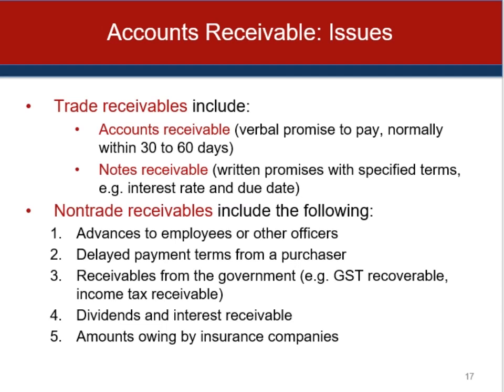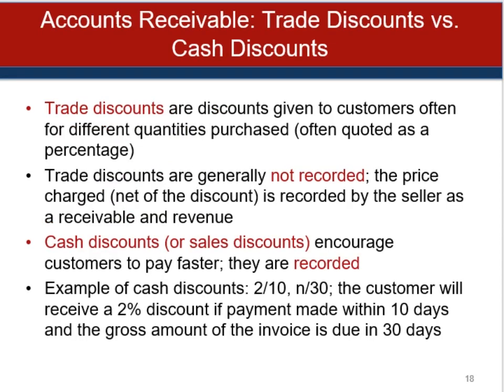Two types of discounts must be considered in determining the value of receivables: trade discounts and cash discounts. Trade discounts represent reductions from the list or catalog prices of merchandise and are often used to avoid frequent changes in catalogs or to quote different prices for different quantities purchased. Cash discounts, also called sales discounts, are offered as an inducement for prompt payment and are communicated in terms such as 2/10 net 30 — meaning a 2% discount if paid within 10 days of the invoice date, otherwise the entire gross amount is due in 30 days.